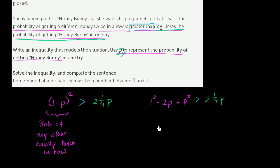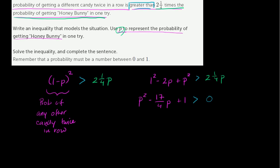If we subtract 2 and 1 fourths P from both sides, we get P squared minus 2P minus 2 and 1 fourths P, which gives us P squared minus 4 and 1 fourths P, or minus 17 over 4 times P, plus 1 is greater than 0. To simplify, I don't like having 17 fourths, so let's multiply both sides by 4. Since 4 is positive, it won't change the direction of the inequality. So we get 4P squared minus 17P plus 4 is greater than 0.